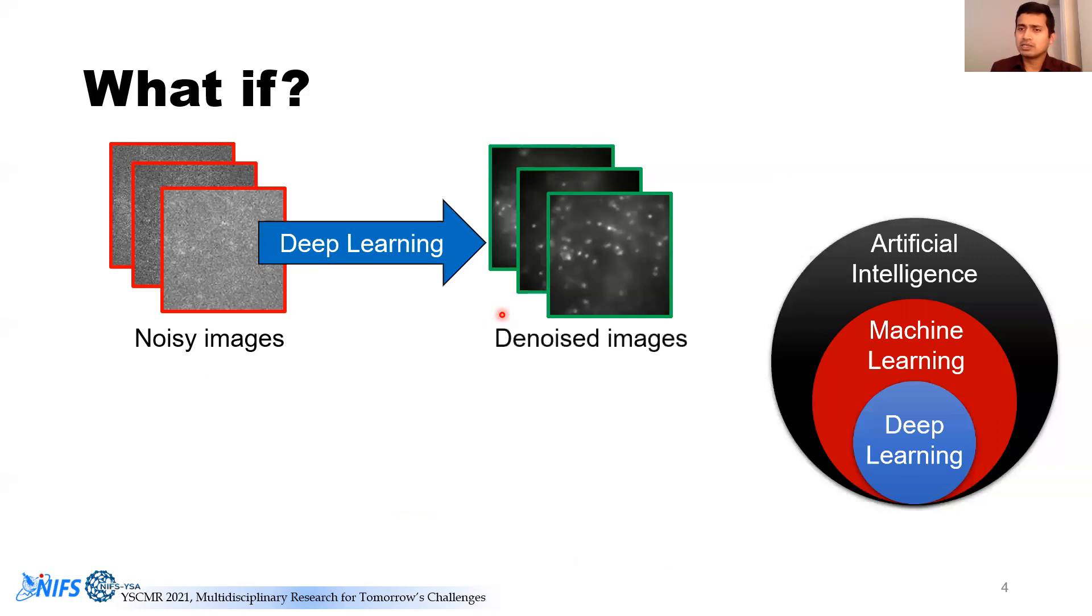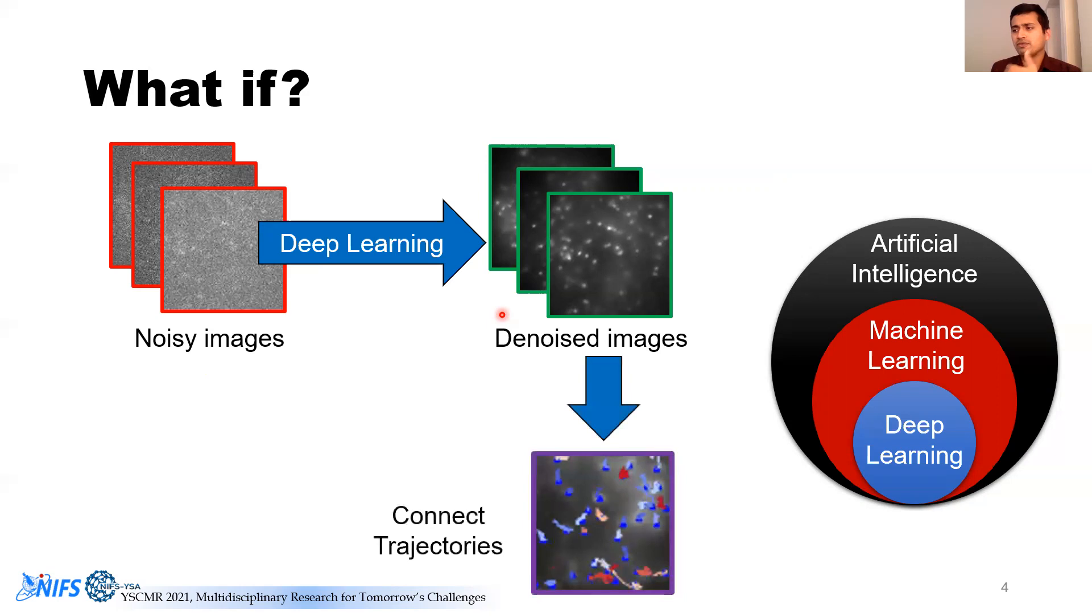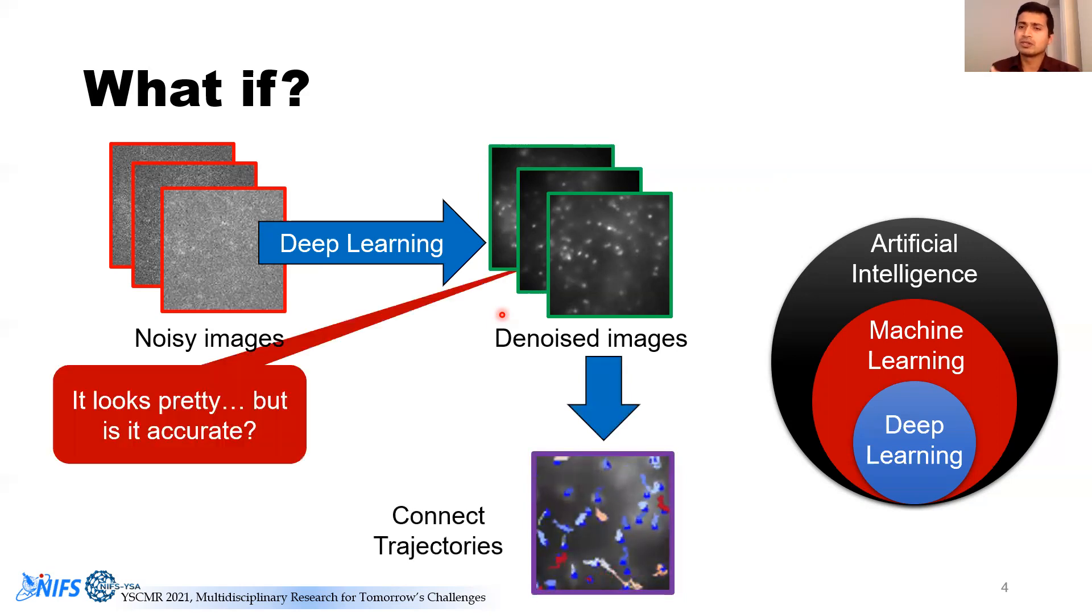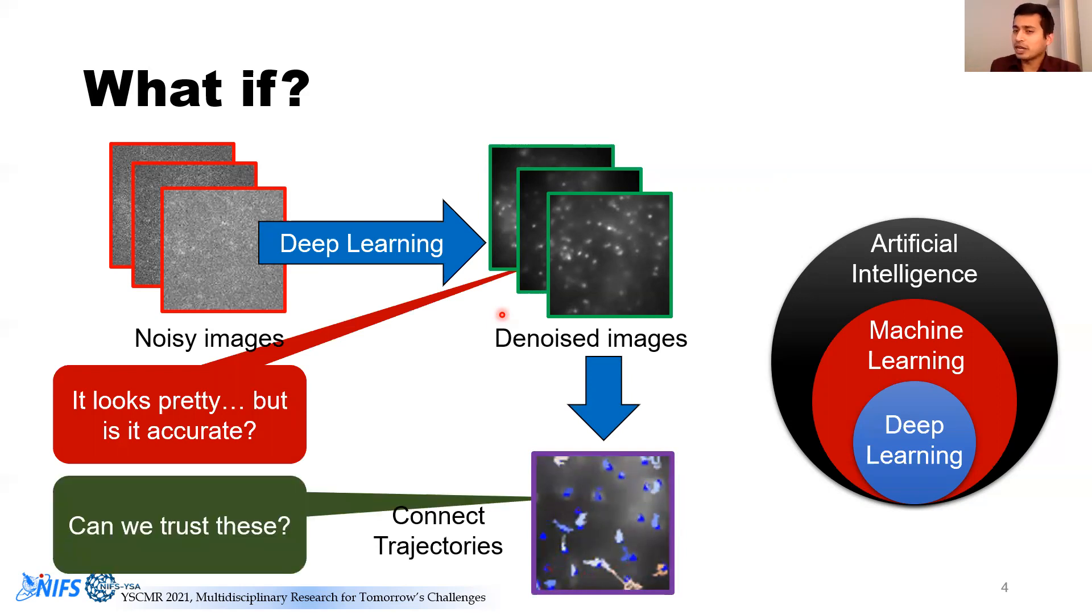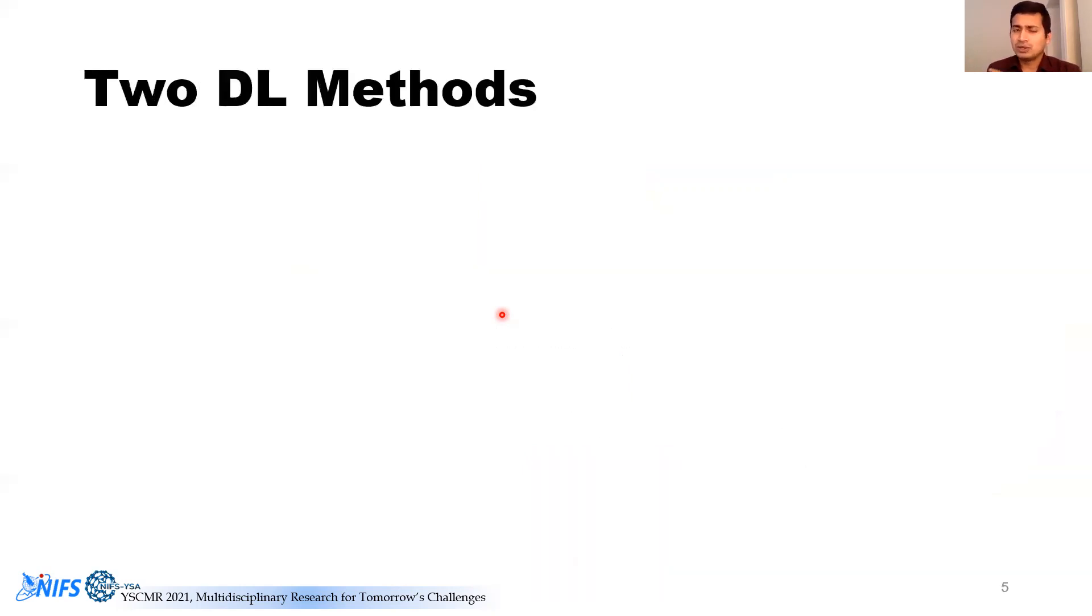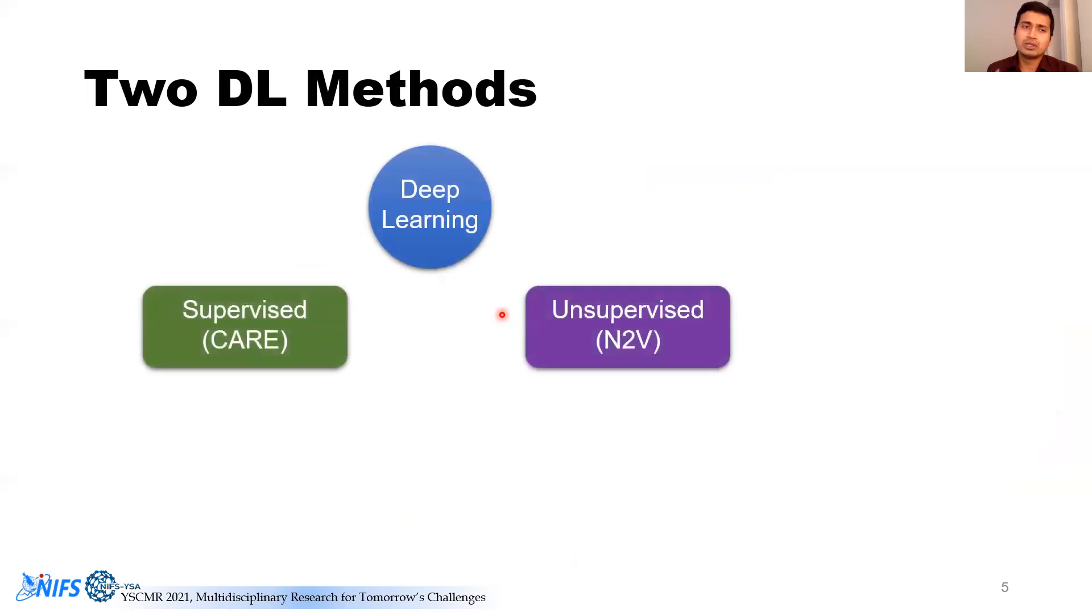There are some questions that come, because once you connect these trajectories, can we actually trust them? Because it looks pretty, but is it actually accurate? Those are the questions that we have. We are using two deep learning methods, one which uses a supervised approach and the other an unsupervised approach. It's called CARE, and this one is called N2V.